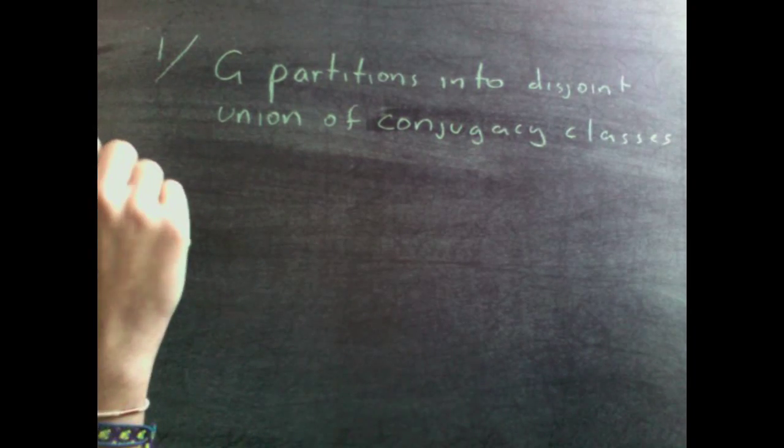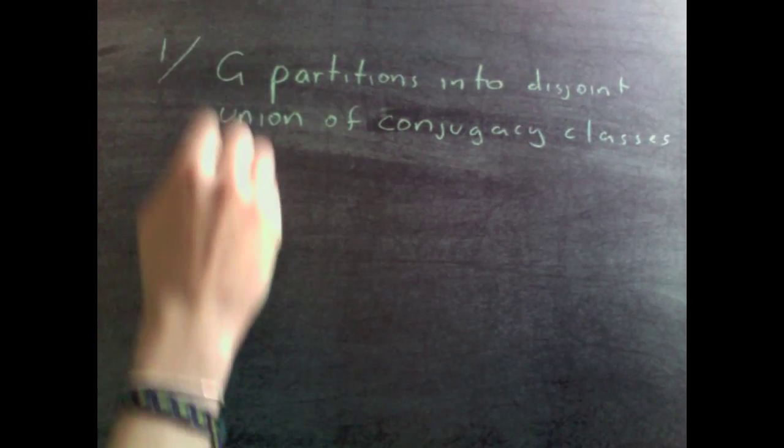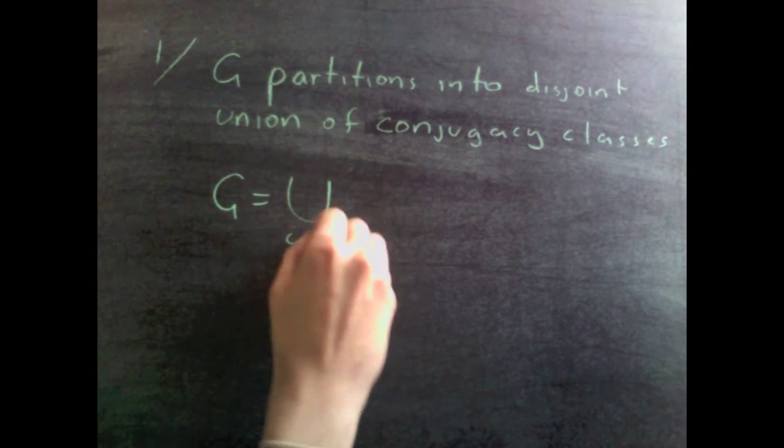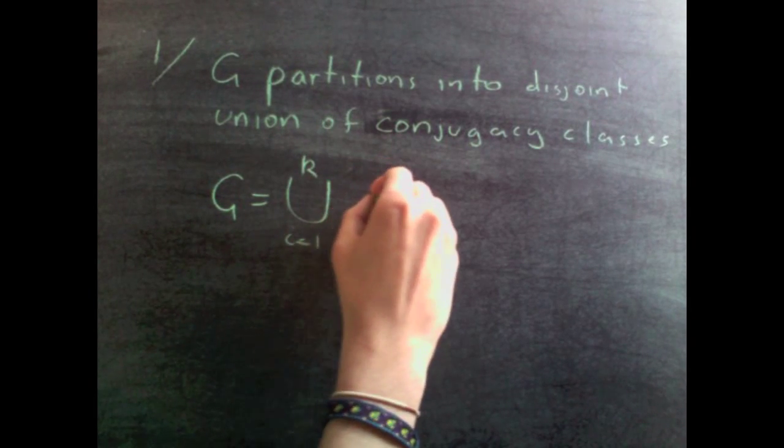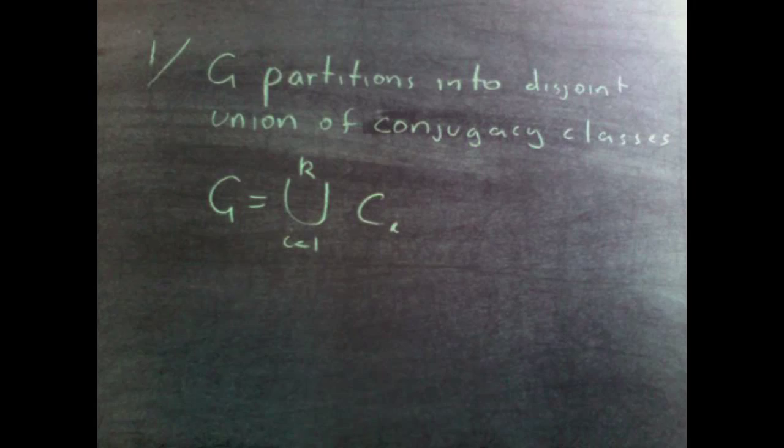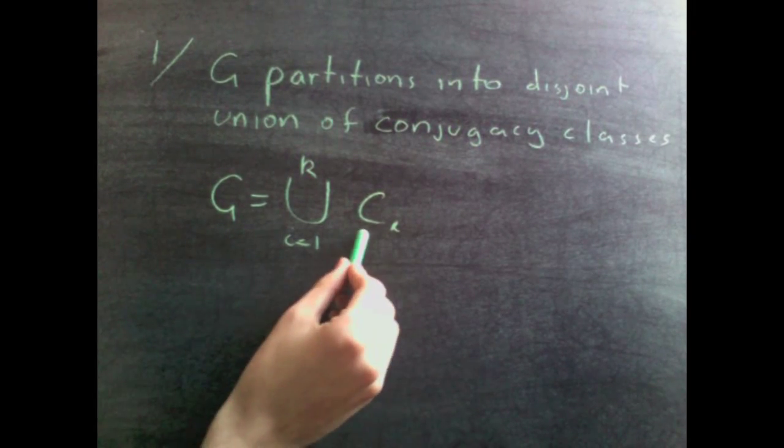So g partitions into a disjoint union of conjugacy classes means that we can write the following. g is a union for i=1 to k of c sub i, where these are the conjugacy classes of g.